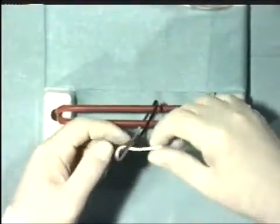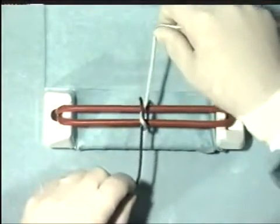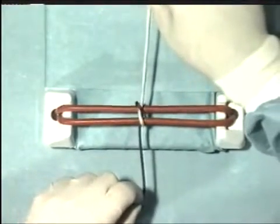Ensure that the threads end up at the opposite side of the jig to which they started and snug down the throw securely.